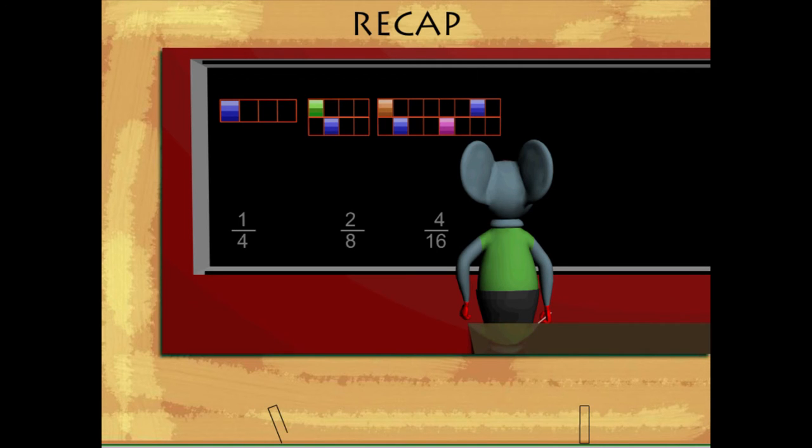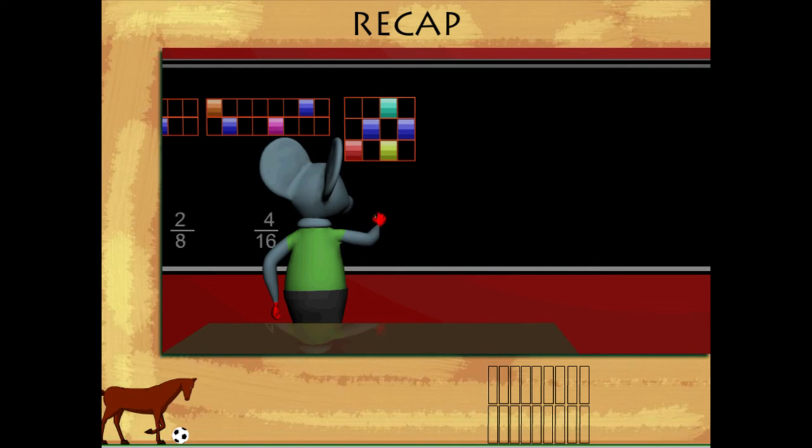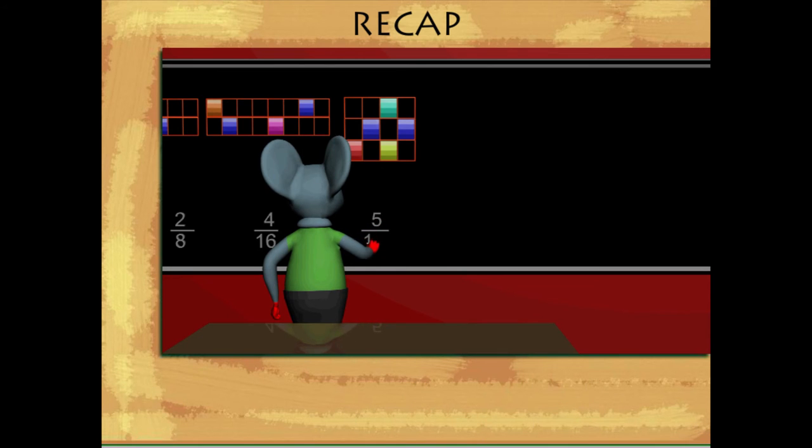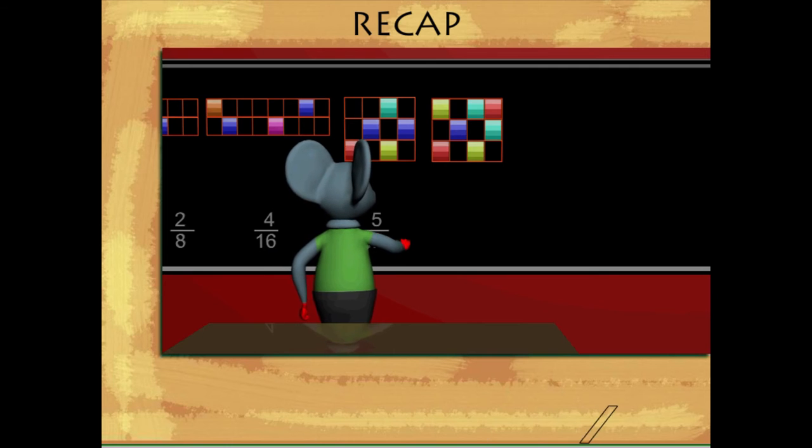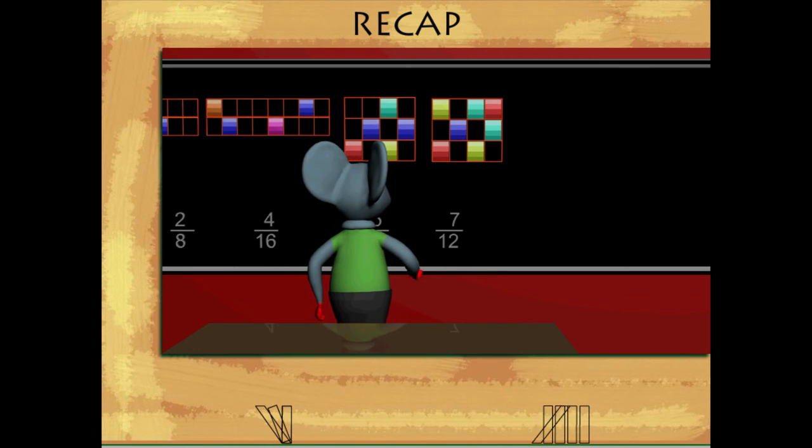The next figure on the board shows five parts shaded out of twelve, so the fraction is five by twelve. The next figure shows seven shaded parts, and the fraction is seven by twelve.